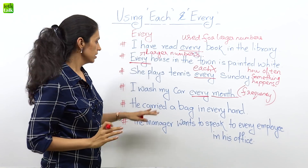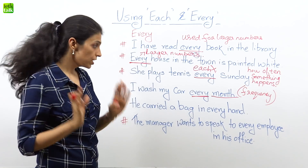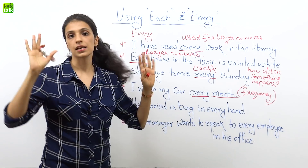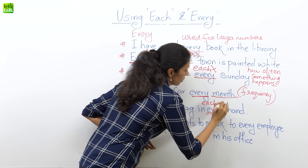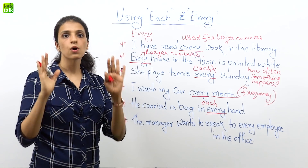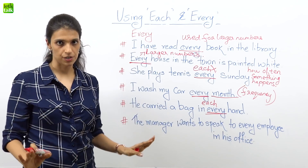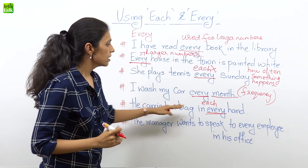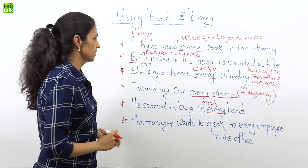Next example: 'he carried a bag in every hand.' Does the sentence sound correct? Think about it — you have two hands. So when I want to say he carried a bag in both hands, I would use 'each' here. Remember, when you talk about two things or two people, always use 'each.' You cannot use 'every' because 'every' talks about three or more. So the correct sentence is: 'he carried a bag in each hand' — he has two hands, so 'in each hand he carried a bag.'